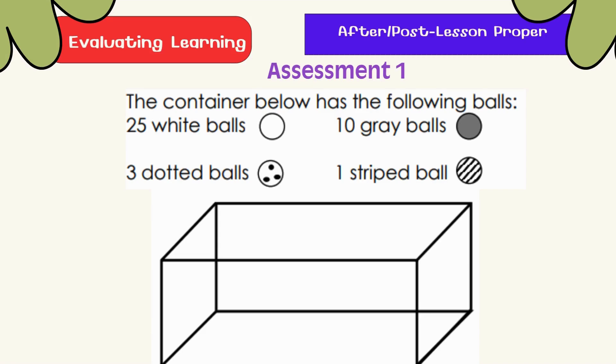The container below has the following balls: 25 white balls, 3 dotted balls, 10 gray balls, and 1 striped ball.